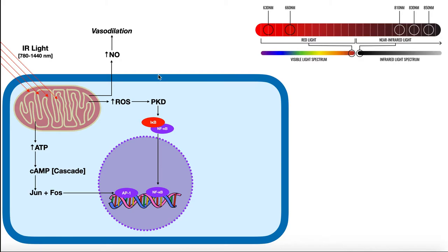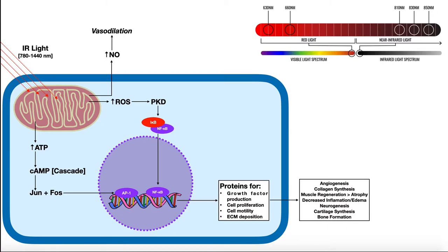Now collectively, AP1 from our second pathway and NF-kappa B from our third, these are going to lead to an increased production of proteins that are growth factors, that are involved in cell proliferation, that are involved in cell motility, so movement of certain cells to the area or around the area, and also deposition of more extracellular matrix. You can imagine that all four of these things are going to be excellent for cellular and tissue repair. So here's some of the basic effects of having these types of proteins upregulated.